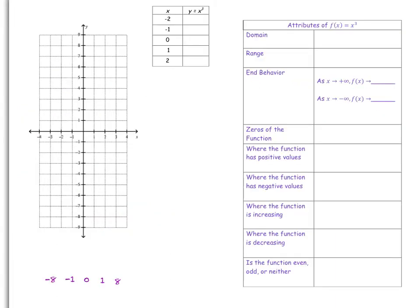Now let's look at graphing the parent cubic function. We have a set of x values and we're going to find the corresponding y values by substituting each x into the parent cubic function. When x = −2, y = (−2)³ = −8. When x = −1, y = (−1)³ = −1. When x = 0, y = 0³ = 0. When x = 1, y = 1³ = 1.